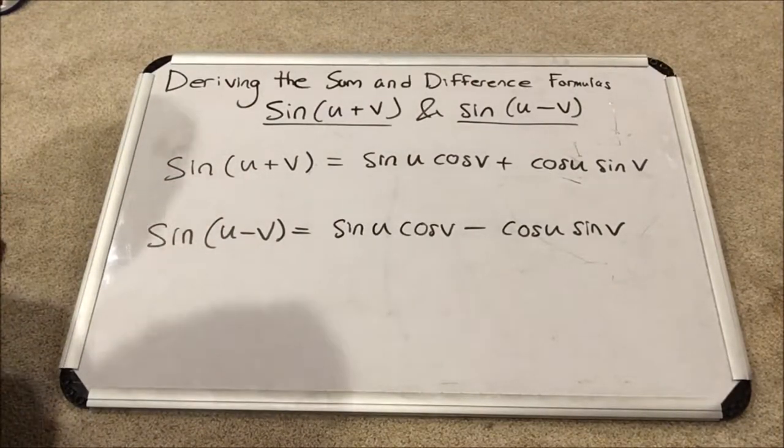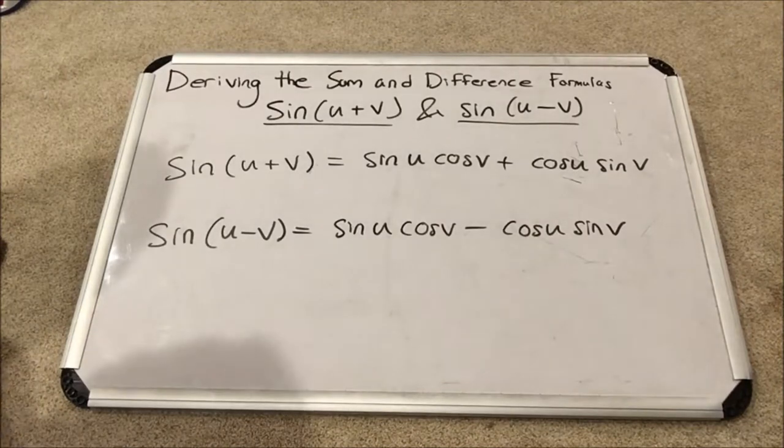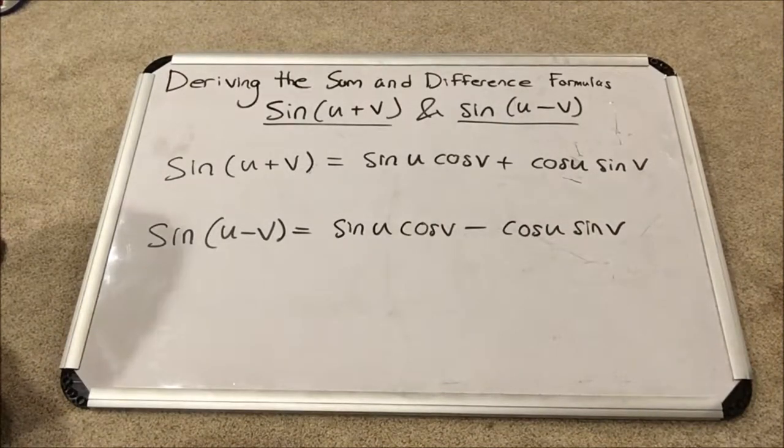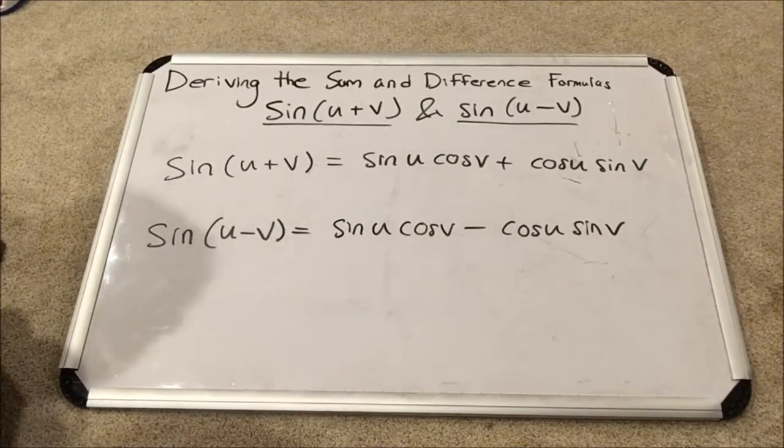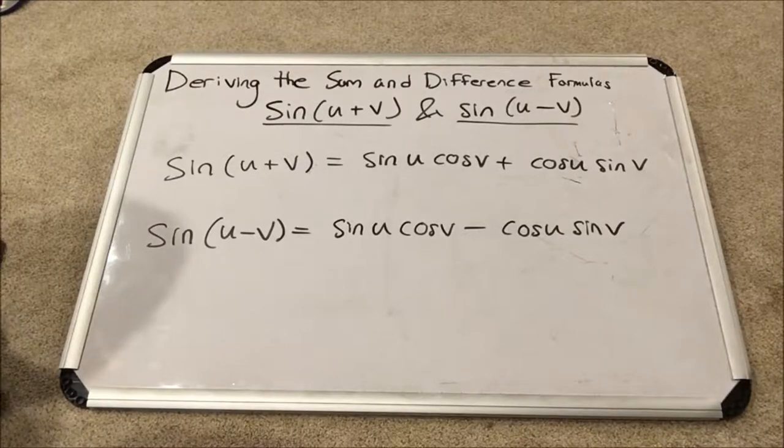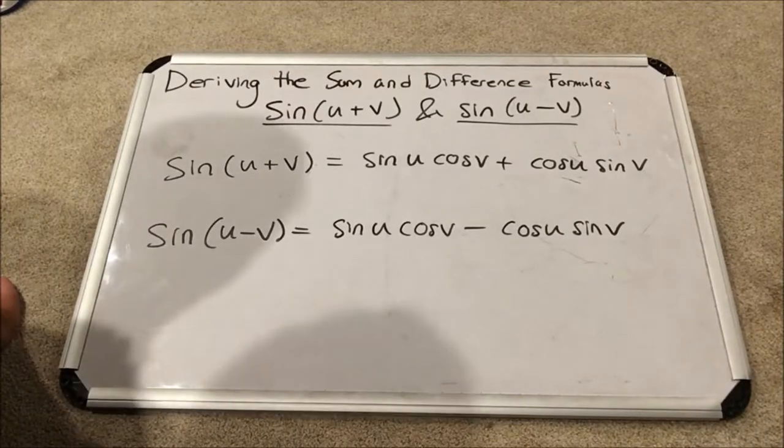These formulas like the ones in part one for cosine u plus v and cosine u minus v are fundamental in trigonometric analytics or analytic trigonometry as it's also known.